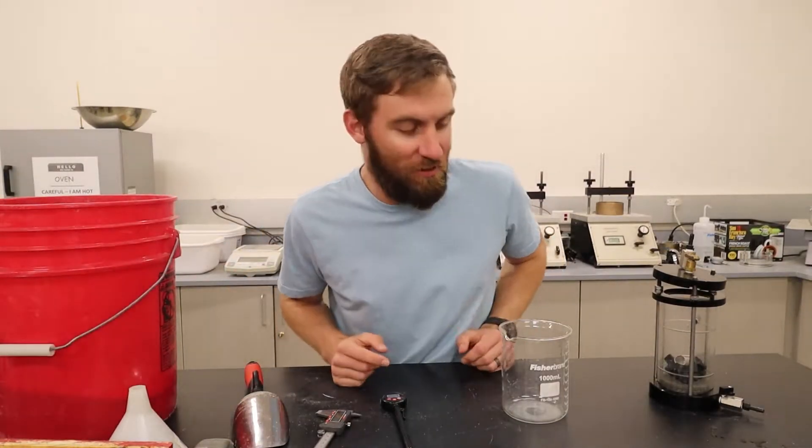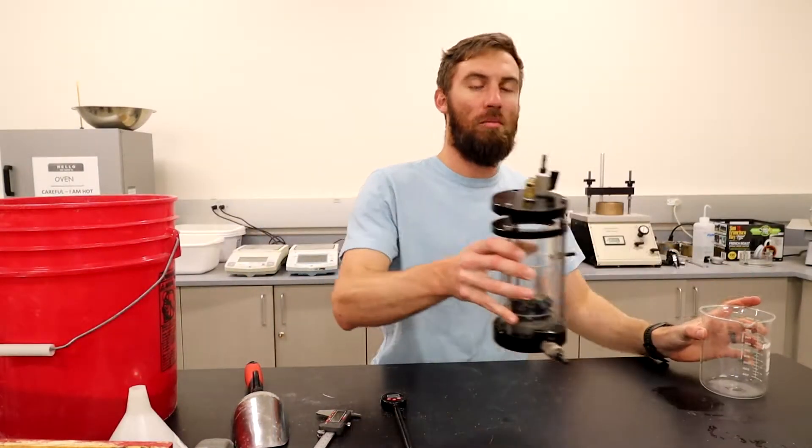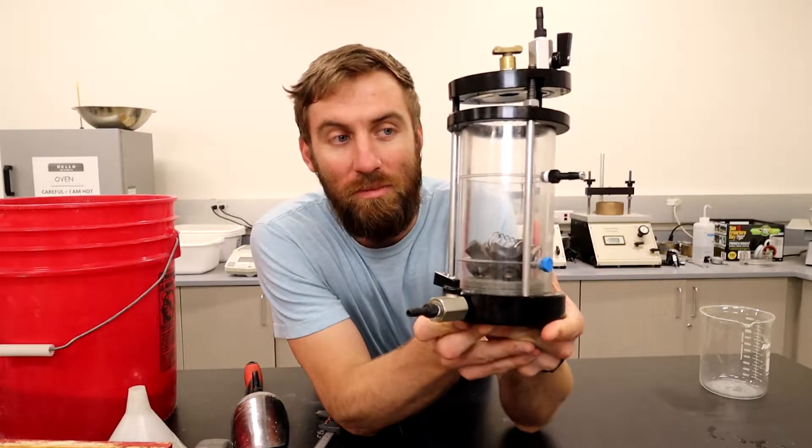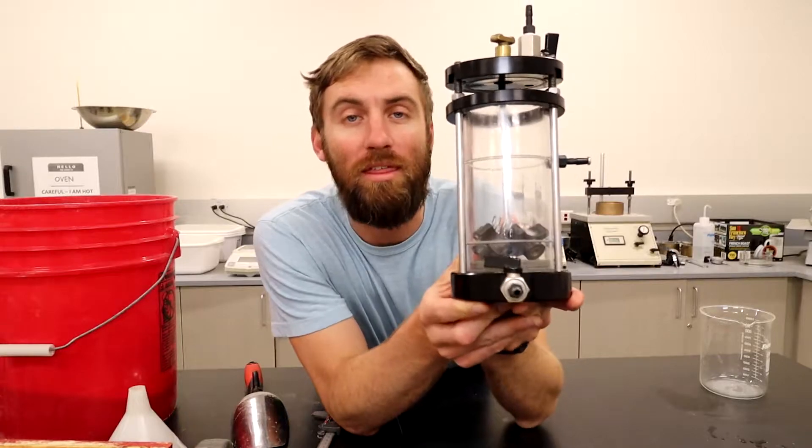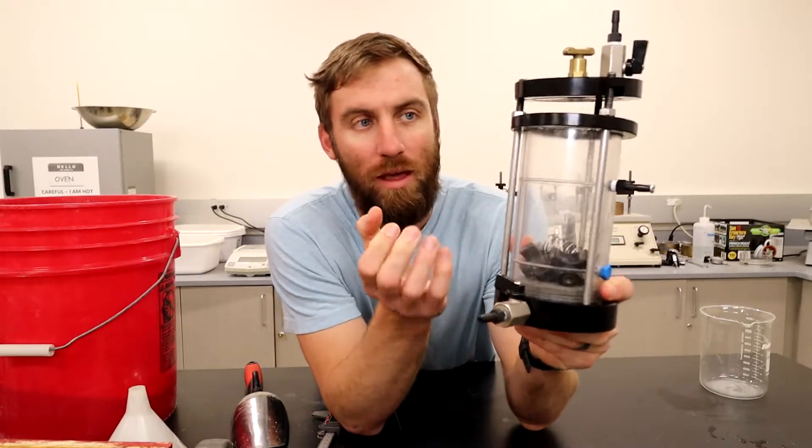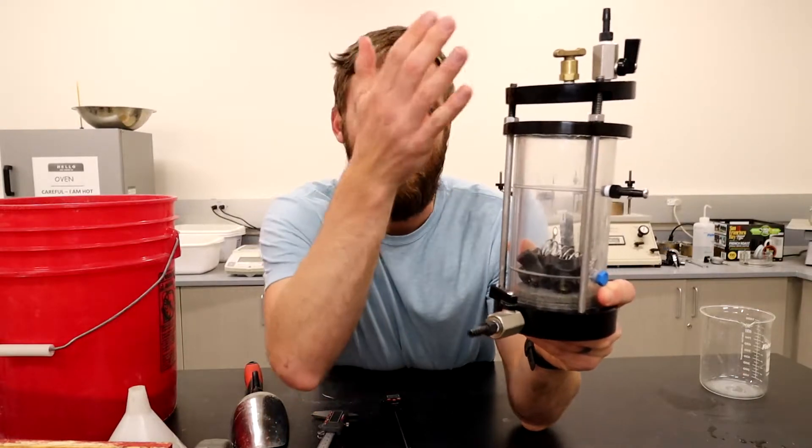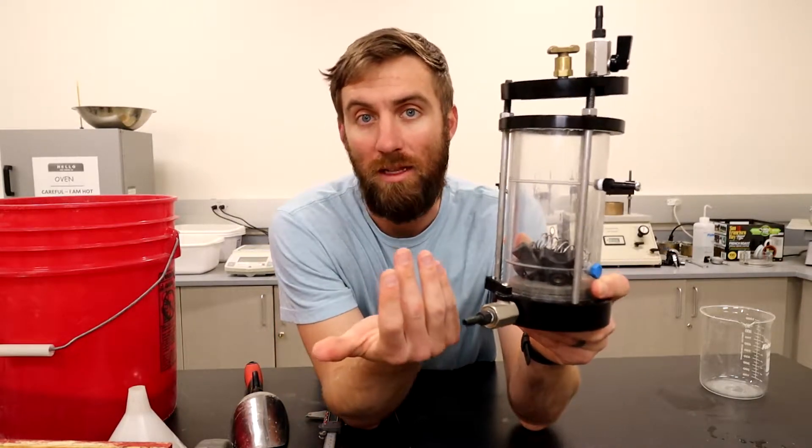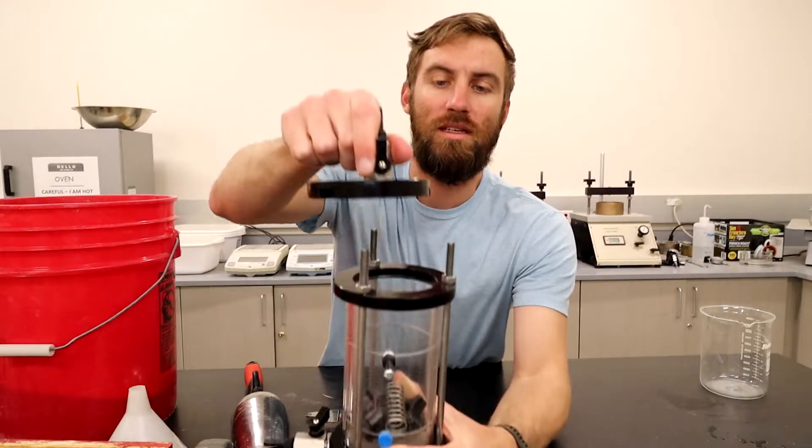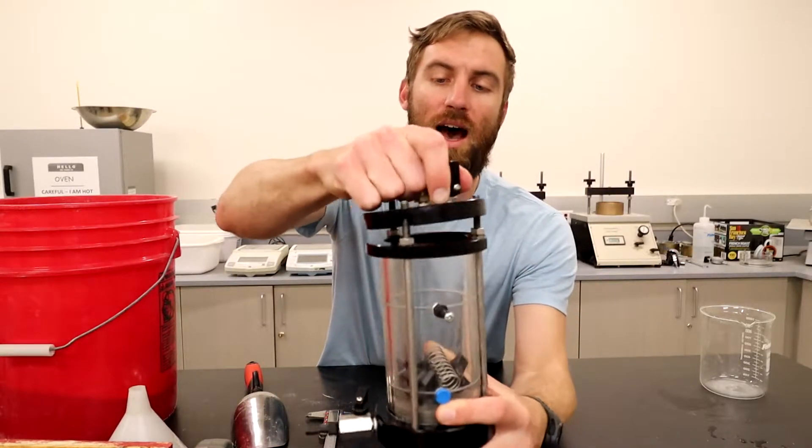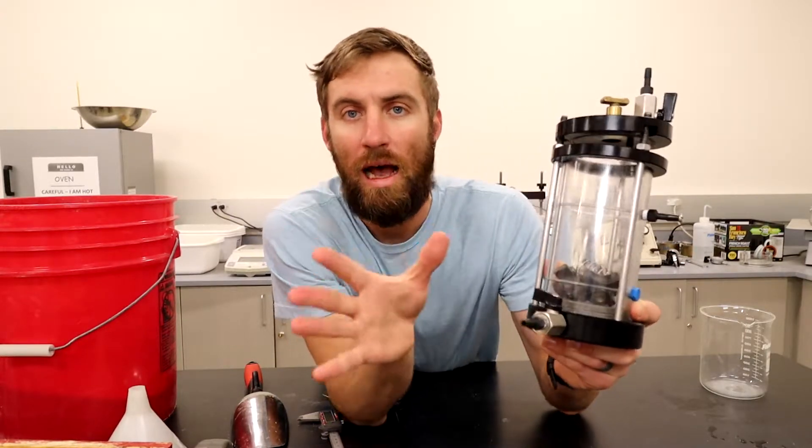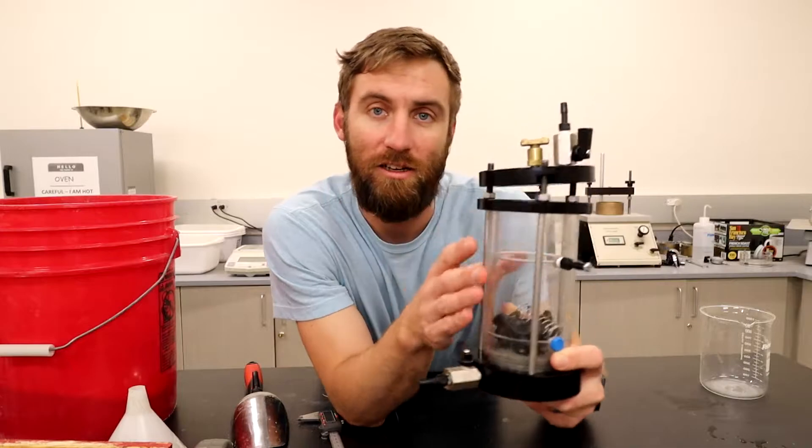Alright, let's review the materials for this lab. First and foremost, the most important thing we have is our permeameter. This is where we're going to be compacting and filling with our sandy soil. And this is basically how we allow water to flow through it and measure the permeability. There's two nozzles: one on the bottom, which will be closed and sealed, and one nozzle at the top. And obviously there'll be soil samples inside with the two porous stones.